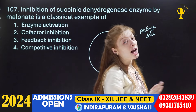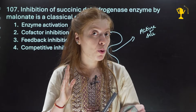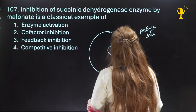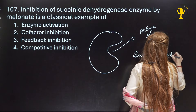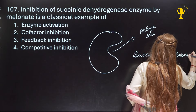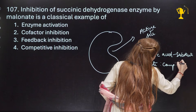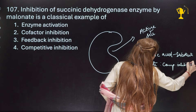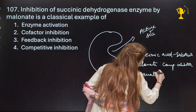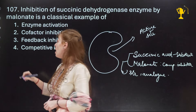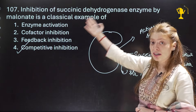Malonate is the competitive inhibitor of succinate dehydrogenase, while succinic acid is the substrate. The structures of succinic acid and malonate are very similar — they are structural analogs of each other. Because they are structural analogs, both can fit into the active site and the enzyme cannot tell which one is bound. If the inhibitor binds, the reaction stops. So this is a classic example of competitive inhibition. Very easy question — the answer is competitive inhibition.